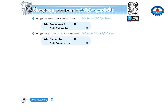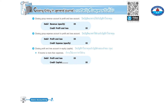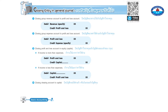Three: closing profit and loss account to equity capital. If income is more than expenses, debit profit and loss, credit capital. If income is less than expenses, debit capital, credit profit and loss. Four: closing drawing account to capital — debit capital, credit drawing account.